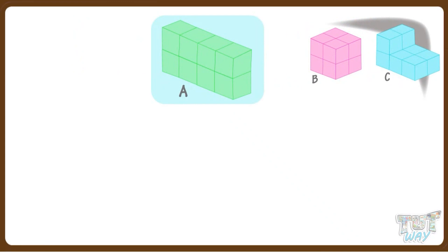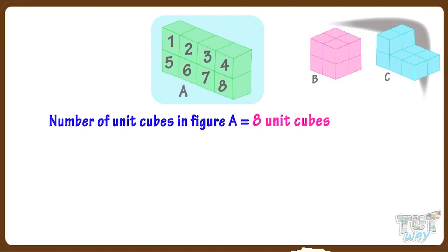So kids, we need to find out number of unit cubes used to make figure A to find its volume. Let's find it out. Figure A has two rows of four unit cubes each. So, figure A is made up of eight unit cubes.